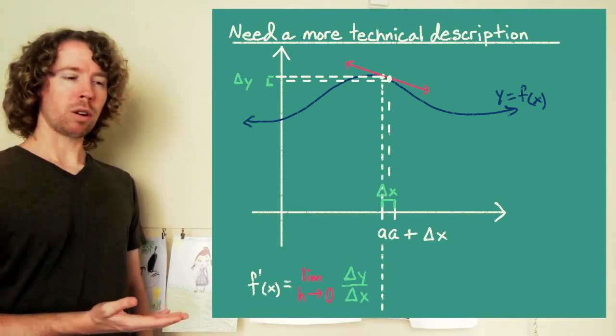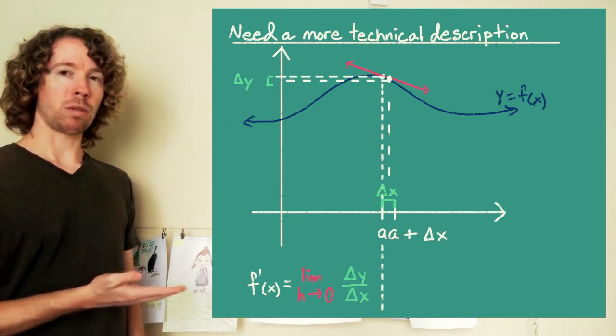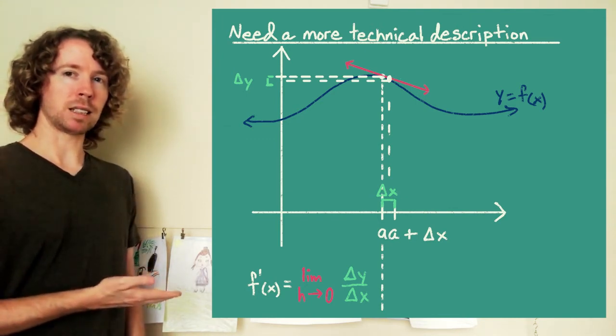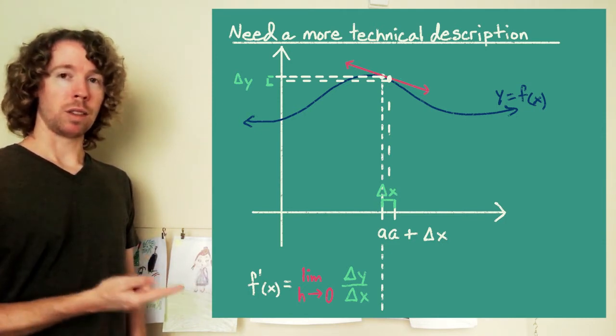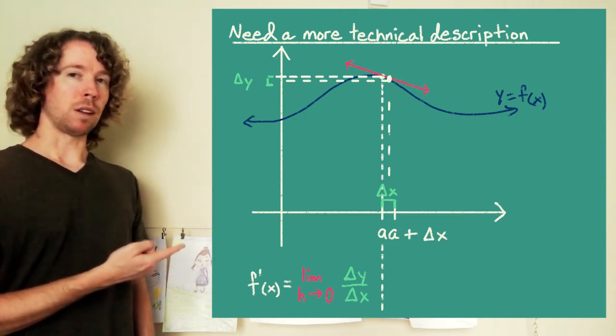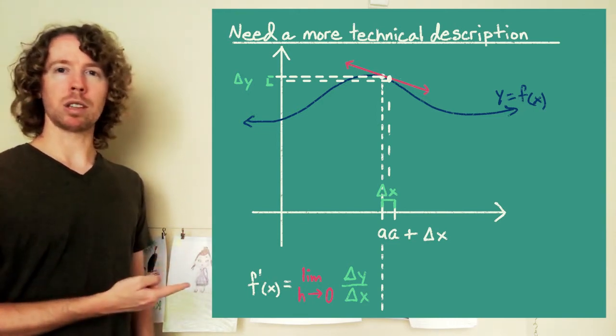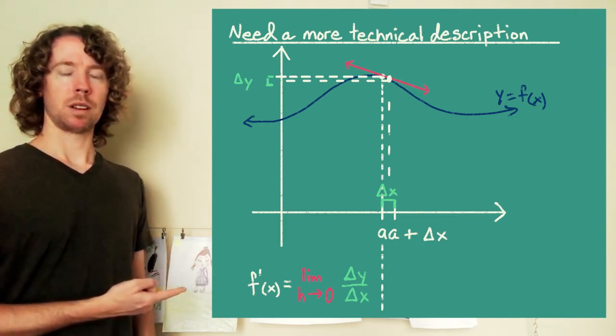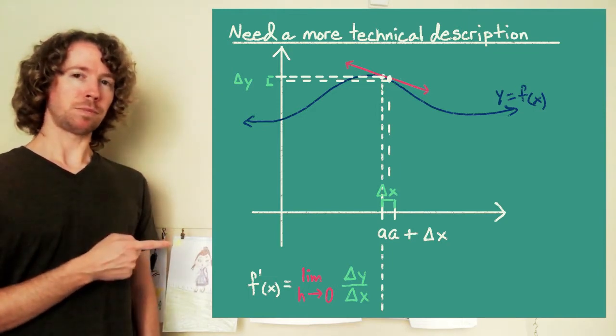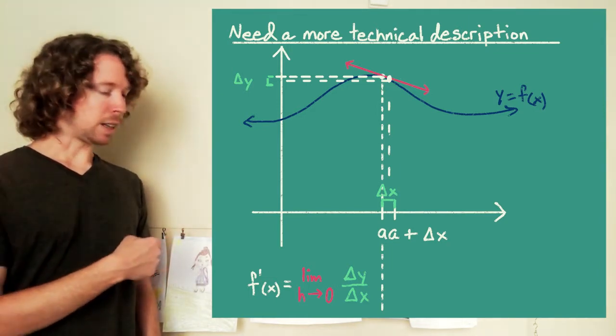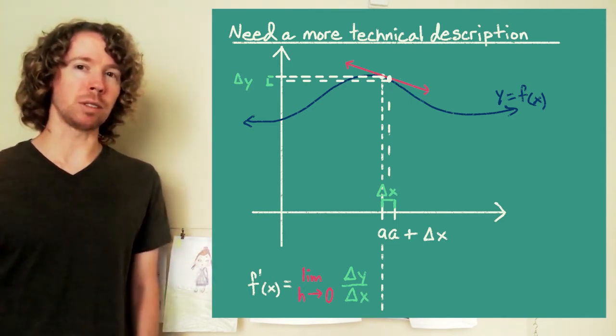And if you think about it, in order for this limit to give us a number, in order for this derivative to exist and give us a number, since the bottom of this fraction is shrinking down to zero, that top part better be shrinking down to zero as well. If the top is not shrinking down to zero and the bottom is shrinking down to zero, then that limit is just going to be infinity or negative infinity. So we know if this derivative exists and we have a slope of the tangent line, then as this delta x, this change in x shrinks down to zero, that change in y has to shrink down to zero.